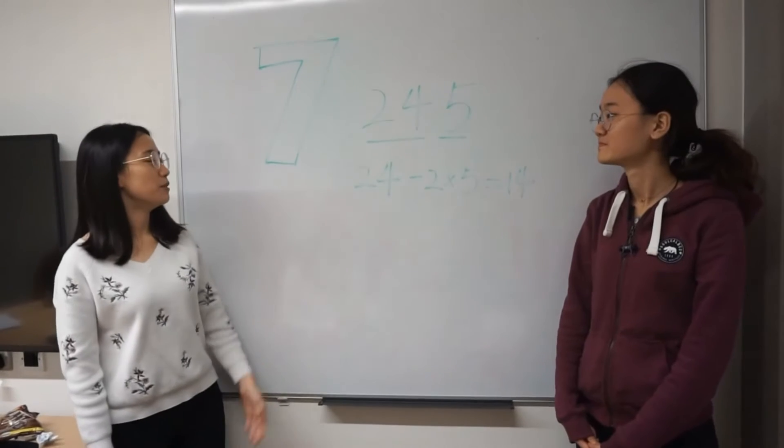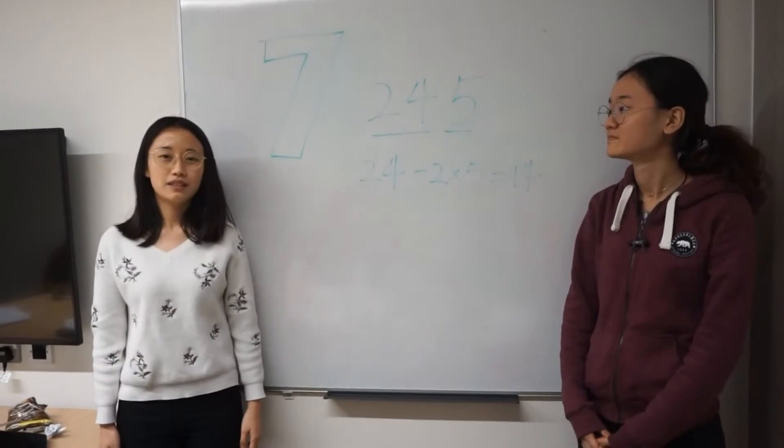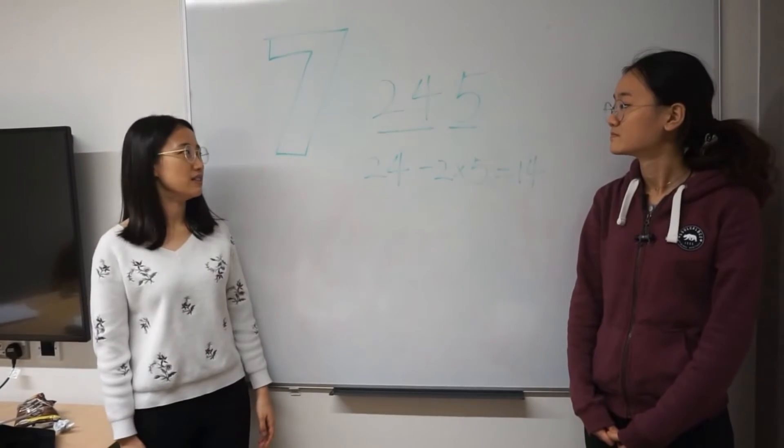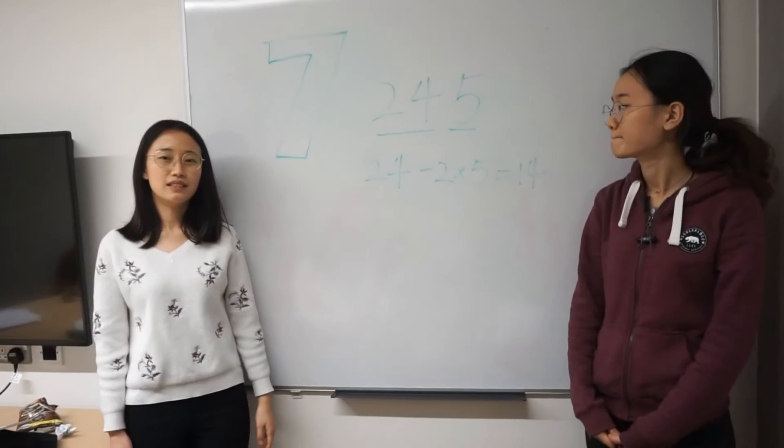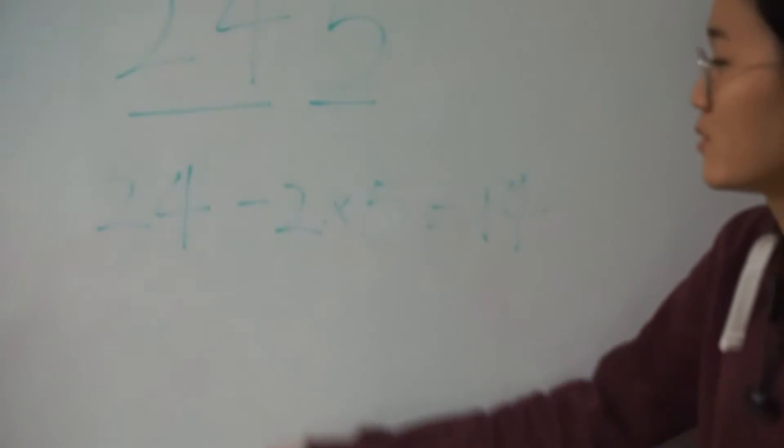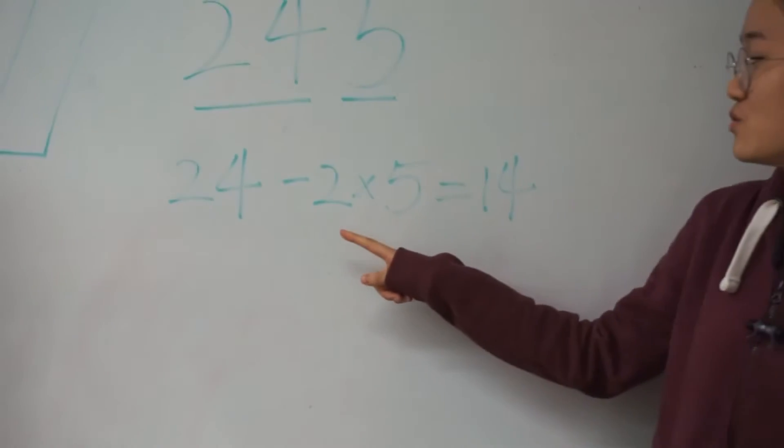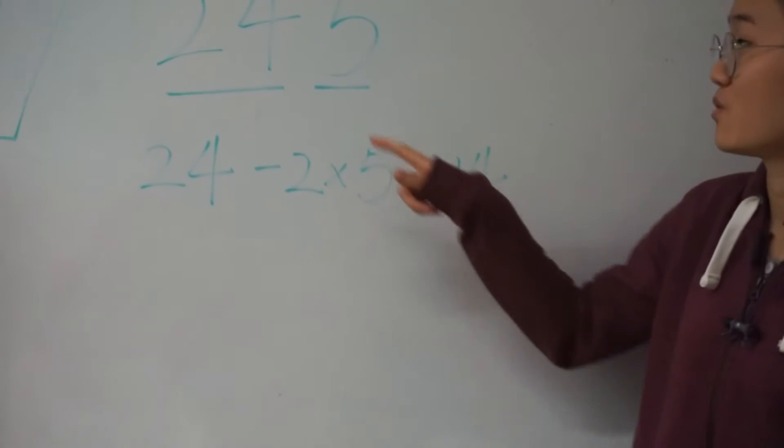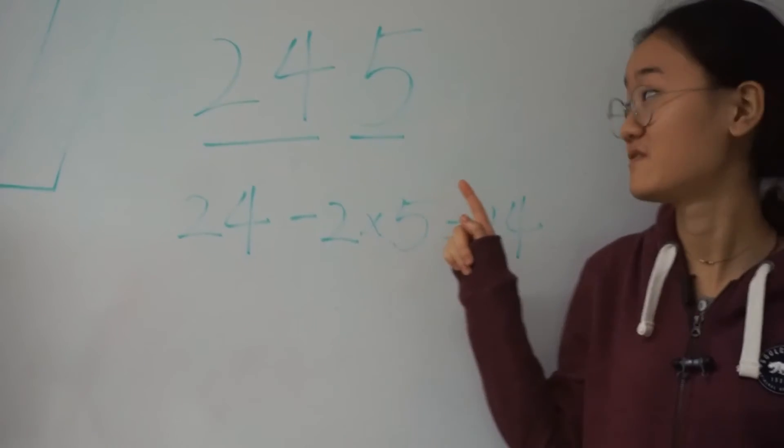For the number is divisible by 7, firstly we take 2 times the last number and use the remaining to minus it. If the output is divisible by 7, so this number is divisible by 7. For example, 24 minus 2 times 5 is 14 can be divisible by 7, so 245 can be divisible by 7.